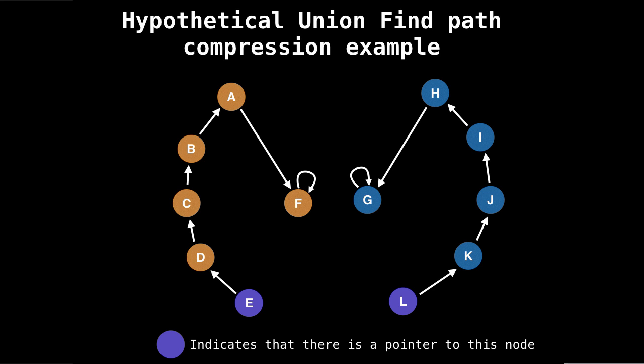So let's start by finding the parent node of E. So E's parent is D, and then D's is going to point to the root node of C, C to B, and B to A, and then A to F.